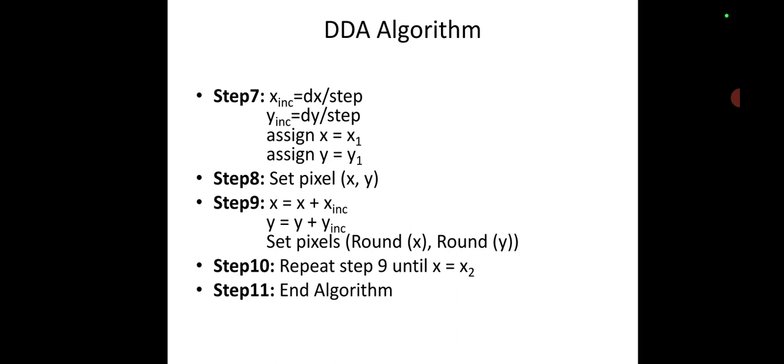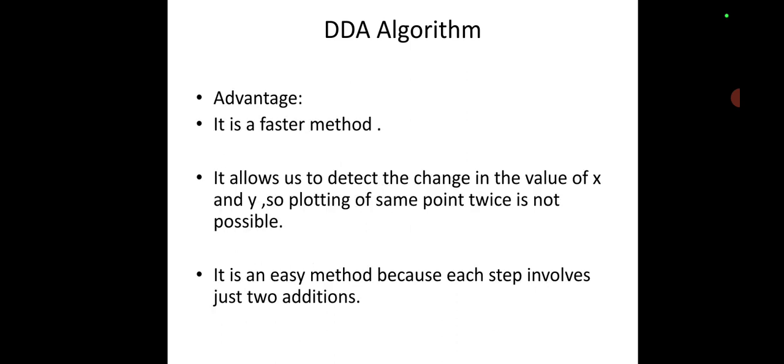So we will be checking whether we are going to increment in x or y depending on the absolute value of delta x and delta y, and that value we are adding into the new value. This procedure will be repeated till we are reaching to the x₂ value, that is the end point of a particular line. Step 11: End Algorithm.